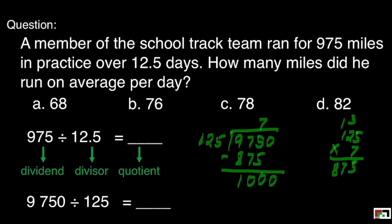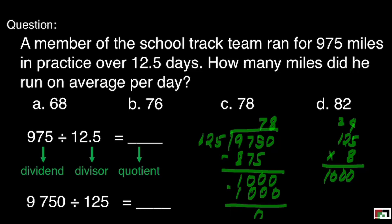How many 125 are there in 1,000? Yes, that's 8. 8 times 125 is equal to 1,000. And let's subtract. We get 0. Our final answer for this is letter C. It means, on average, a member of the track team can run 78 miles.